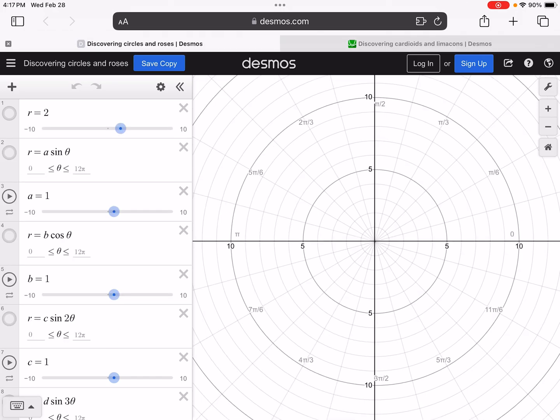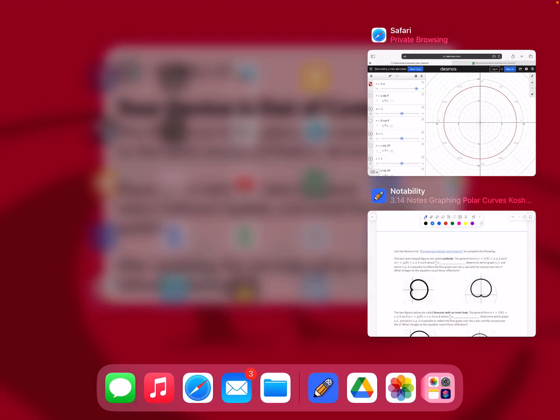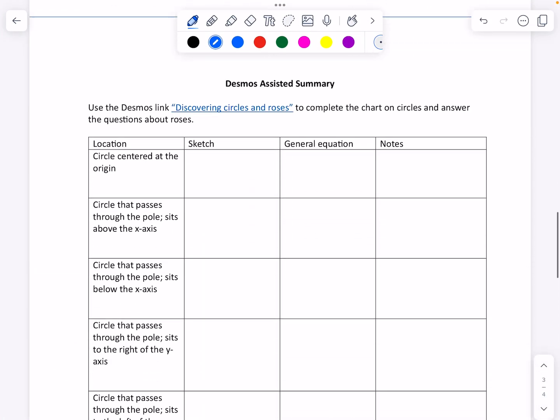Let's do circles first. So if we look at circles, notice a circle can be centered at the origin if we just say r is equal to whatever. Okay, so if I have a radius, if I just say r equals, oh, I don't know, 8.4, then it's just going to give me a circle centered at the origin with a radius of 8.4.